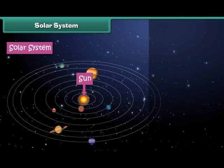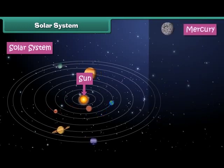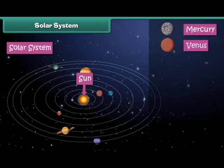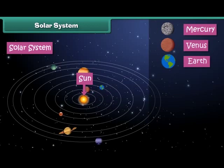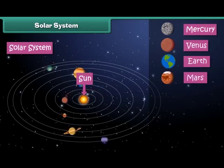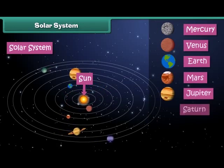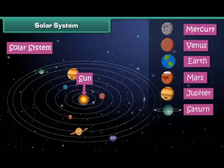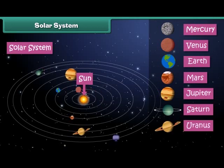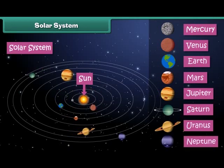The eight planets are Mercury, Venus, Earth, Mars, Jupiter, Saturn, Uranus, and Neptune.